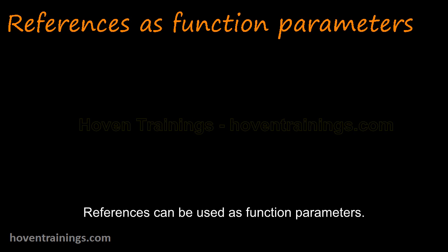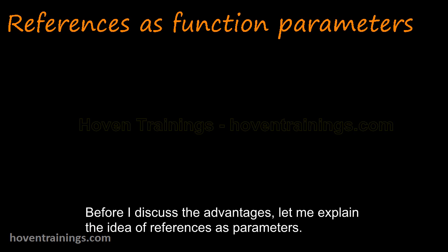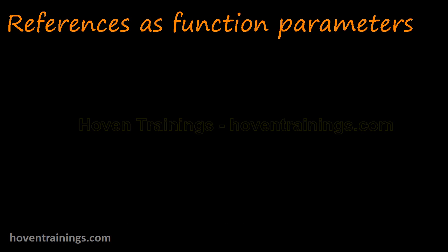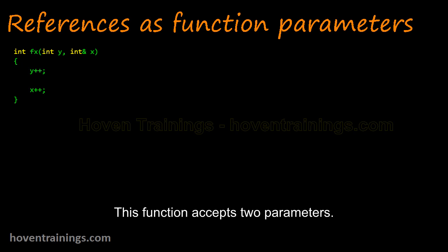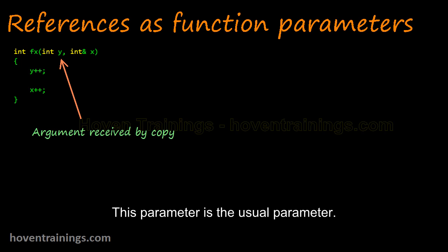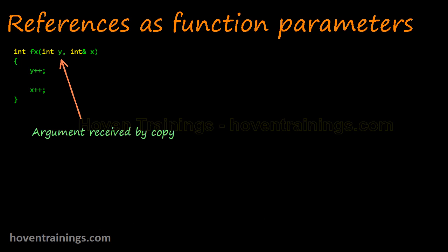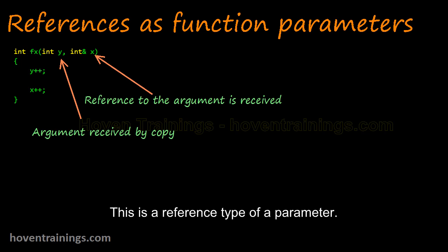References can be used as function parameters. Before discussing the advantages, let me explain the idea of references as parameters. This function accepts two parameters in different ways. This parameter is the usual parameter — when the function is called, the argument is copied into it. This is a reference type of parameter; it receives a reference to its argument.